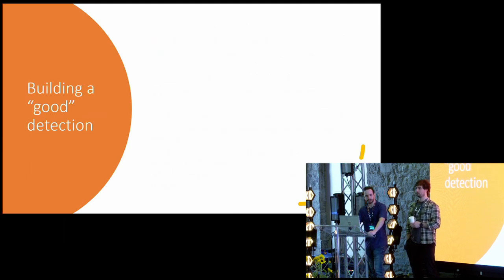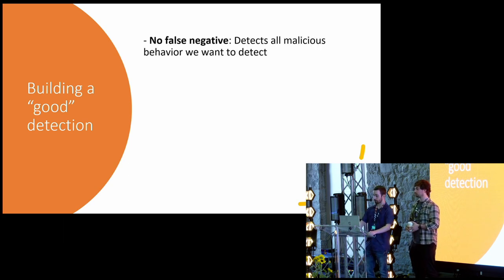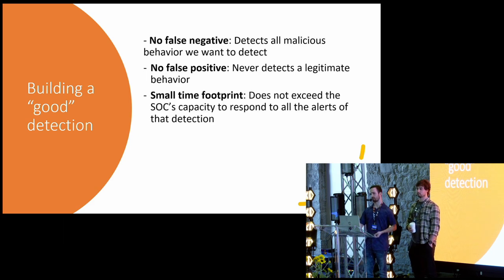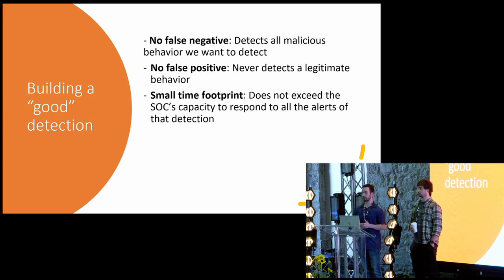So let's say you wake up today you say I want to build a good detection. So what are the characteristics that detection should have? First you want no false negatives. So you want to detect all malicious behavior you want to detect. But you also want no false positives. So you never want to detect a legitimate behavior. You want the detection to have a small time footprint. Which means you don't want to exceed the SOC's capacity to respond to all of the alerts of that detection.